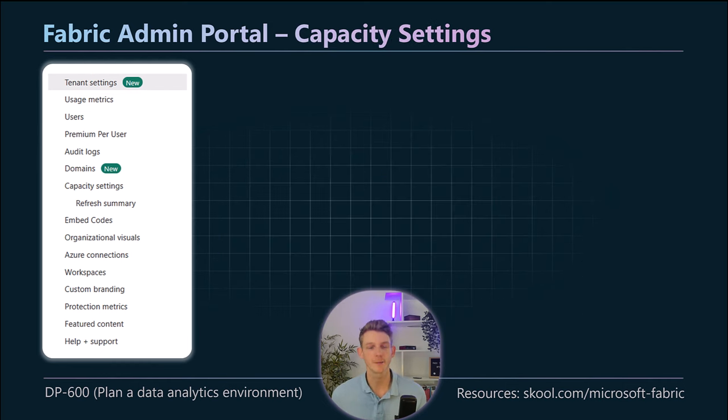Question three: you join a new company and are given a Power BI report theme as a JSON file to use for all new projects. How do you apply this to the report you're currently developing? A — in Power BI Desktop, go to View, Themes, and Customize Current Theme; B — go to the Fabric admin portal, Custom Branding, and set the default report theme; C — use Tabular Editor 2 to update the theme; D — in Power BI Desktop, go to View, Themes, and Browse for Themes. The answer is D. A is for customizing via the UI, not importing a file. B — Custom Branding exists but only updates colors and icons in Fabric, not a default report theme. C — Tabular Editor 2 is also incorrect.